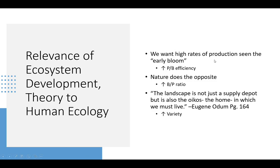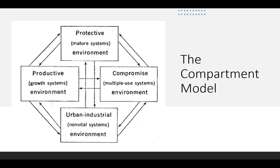We want ecosystems in early bloom to get the most out of them, while nature does the opposite. One quote he found interesting was: 'The landscape is not just a supply depot, but it is also the oikos, or the home, in which we must live.' He wanted to create an ideal world by increasing the variety of ecosystems. This is the model he created to achieve that — different types of environments all working together. He thought this method wouldn't strip the world of its natural resources, but it would be hard to achieve due to zoning issues and privately owned land that should be used for nature preserves. He talked about lawyers creating landscape law to make this a reality.